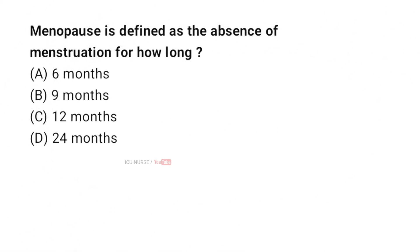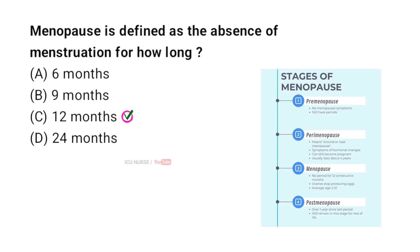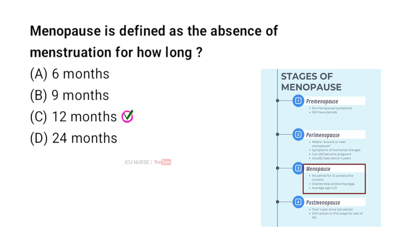Menopause is defined as the absence of menstruation for how long? A. 6 months. B. 9 months. C. 12 months. D. 24 months. And the correct answer is C. 12 months. Menopause is officially diagnosed after a woman has not had a menstrual period for 12 consecutive months, marking the end of her reproductive years.